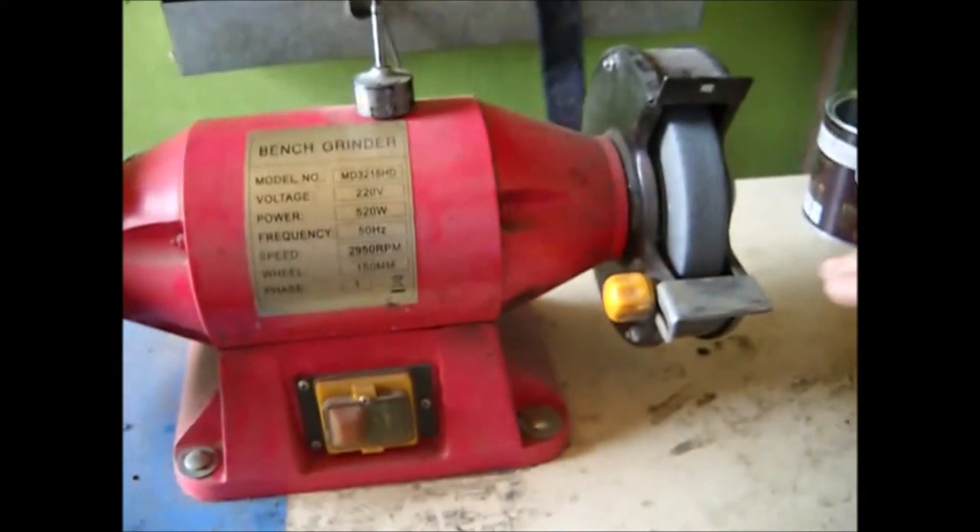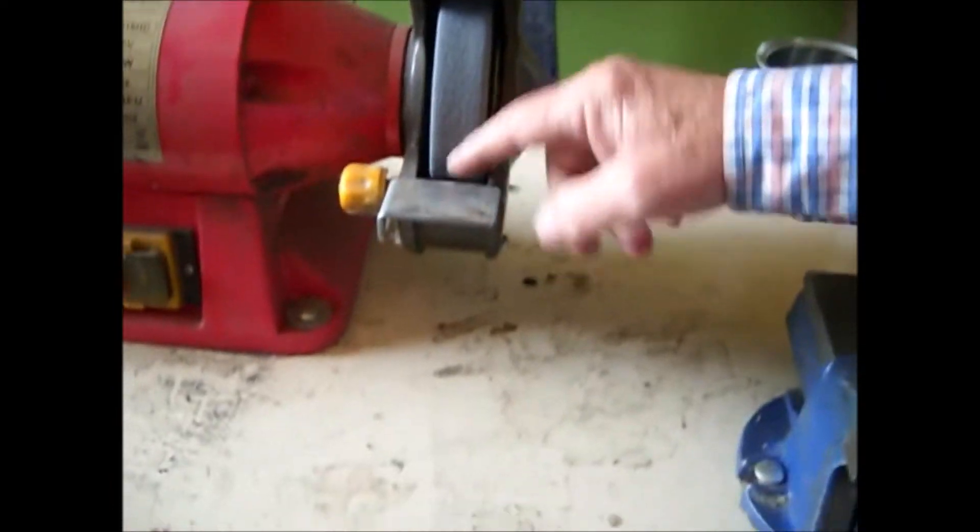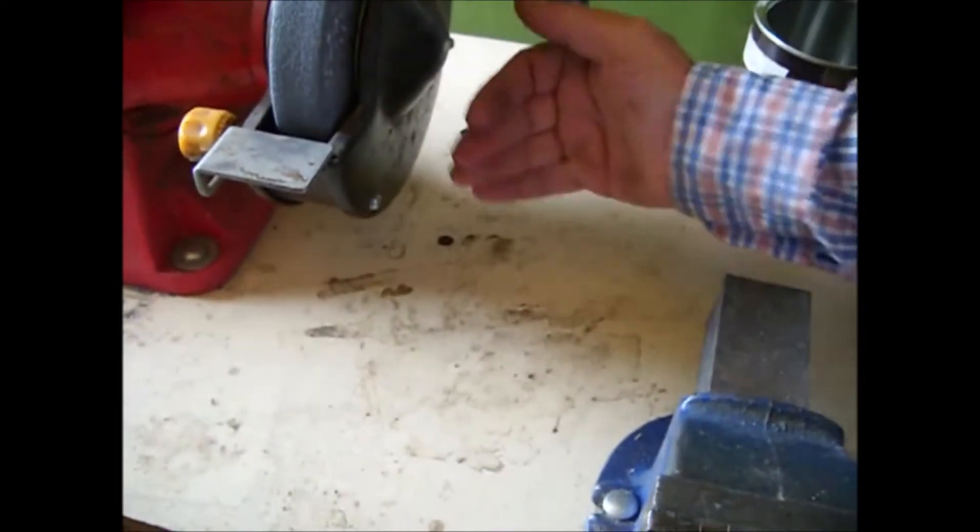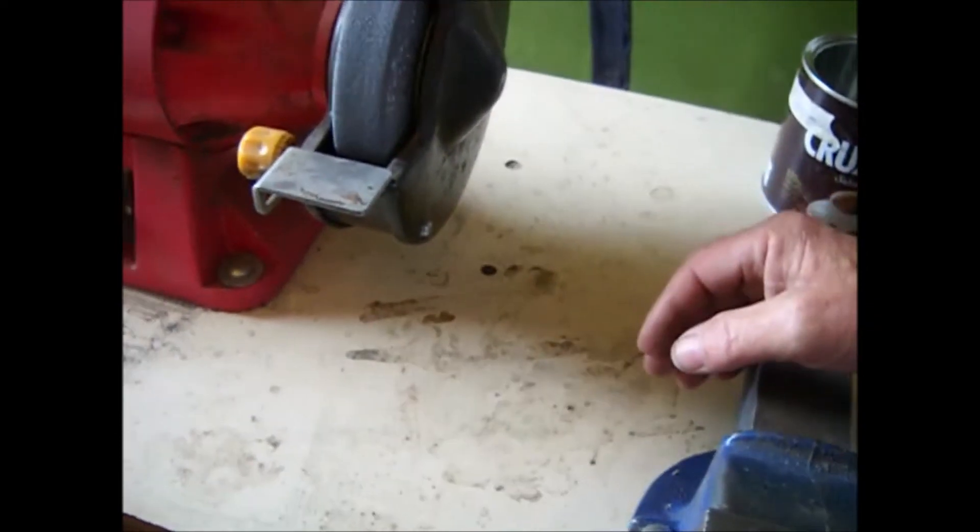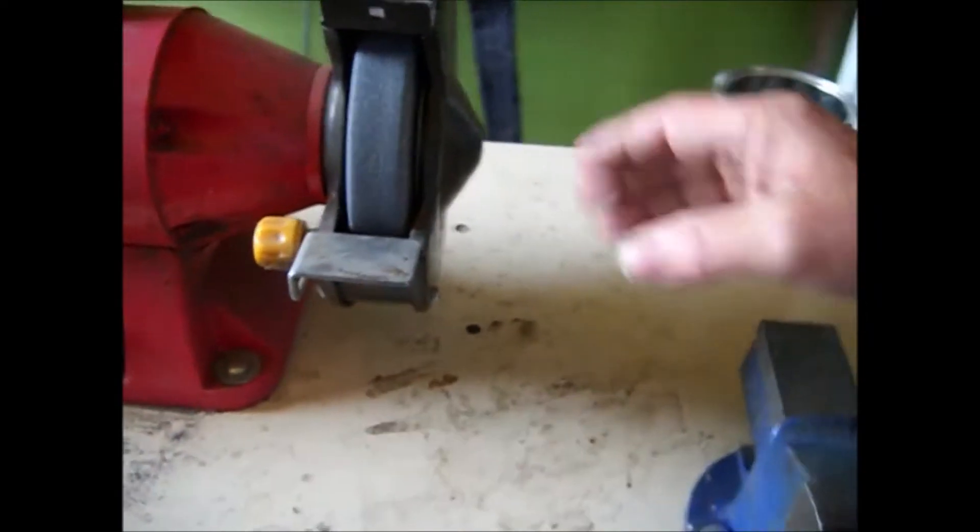Usually when I use my bench grinder, the filings stay inside there, so I can take off this cover and take out of the collector all the filings I have there. But I don't want to do that.